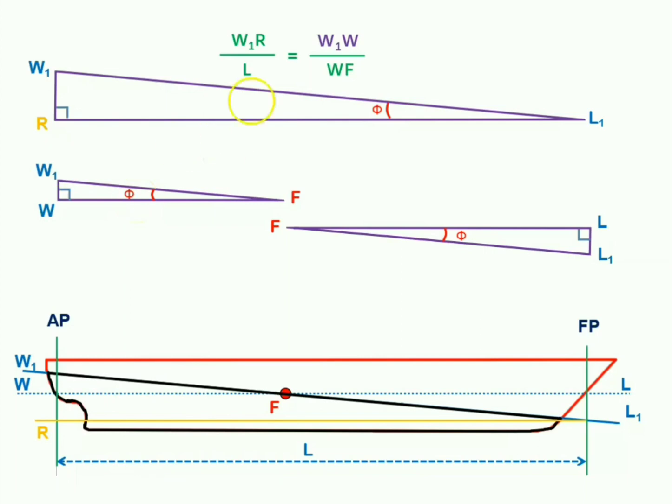Now, let us correlate another two triangles, the bigger one and the smaller one on the other side. We can say, the ratio of W1R to ship's length will now be equals to L1L upon LF. We are aware that W1R is nothing but change in trim all along ship's length. We can alternatively replace the same with small t.